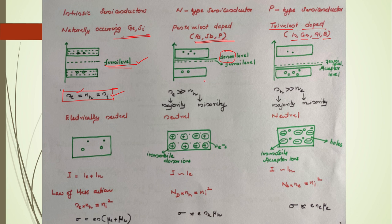For an n-type semiconductor, the number of electrons in the conduction band is greater than the number of holes in the valence band. Holes arise from temperature agitation, while electrons come from both pentavalent impurity addition and temperature agitation. Hence, the majority charge carriers are electrons and the minority are holes, so the Fermi energy level is closer to the conduction band.